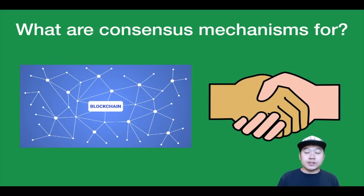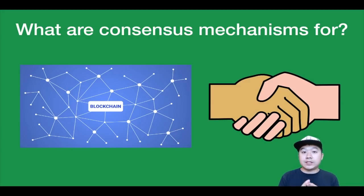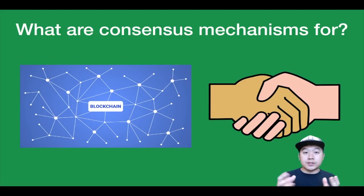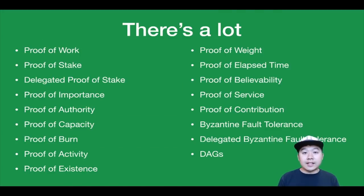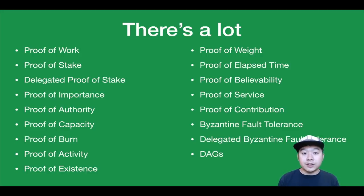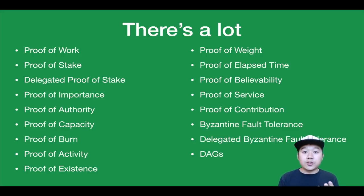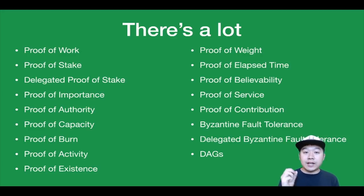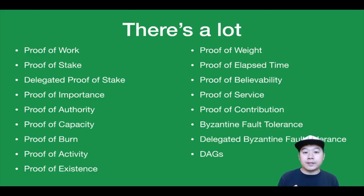There are a bunch of different implementations for consensus mechanisms and they all vary in terms of decentralization, security, incentives, and other measures. There are a lot of consensus mechanisms — you've got proof of work, stake, importance, authority, capacity, and more. I'll cover most of these and give you a high-level overview so you can understand what each one is all about.